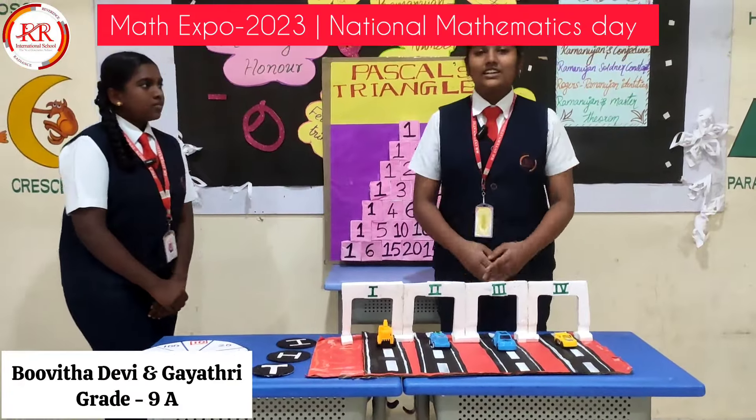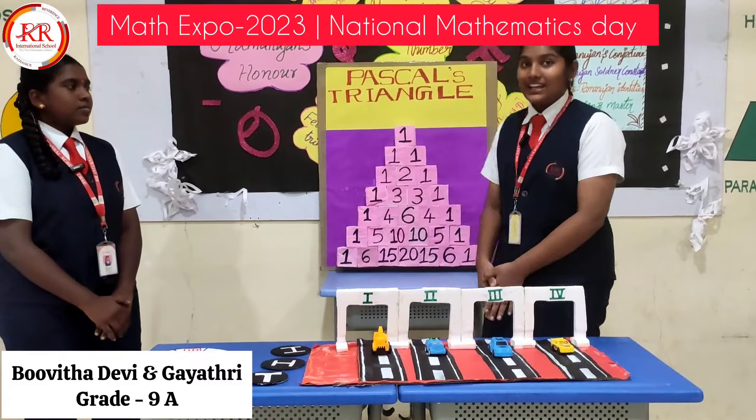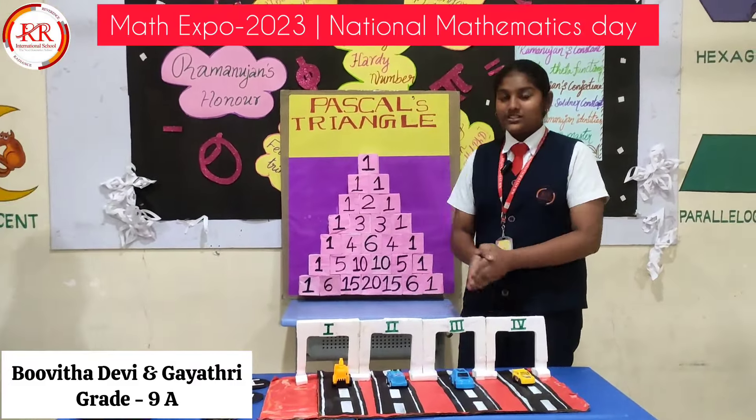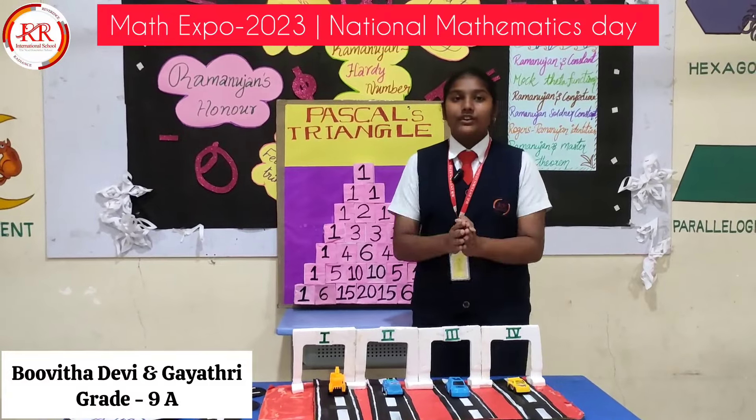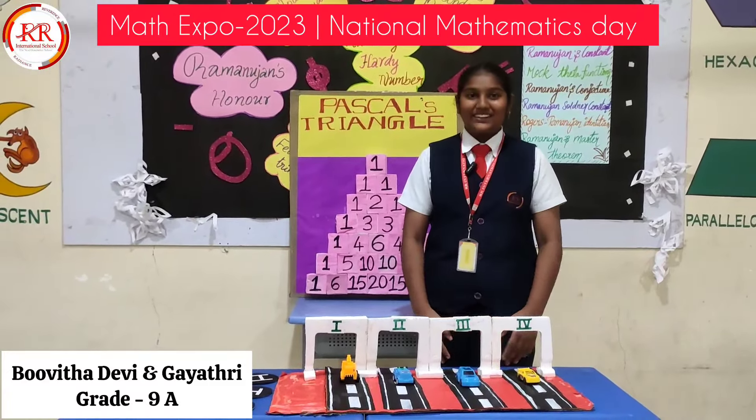And here, the Fibonacci sequence. By adding along the diagonals of each row, the Fibonacci sequence is obtained. Bye.